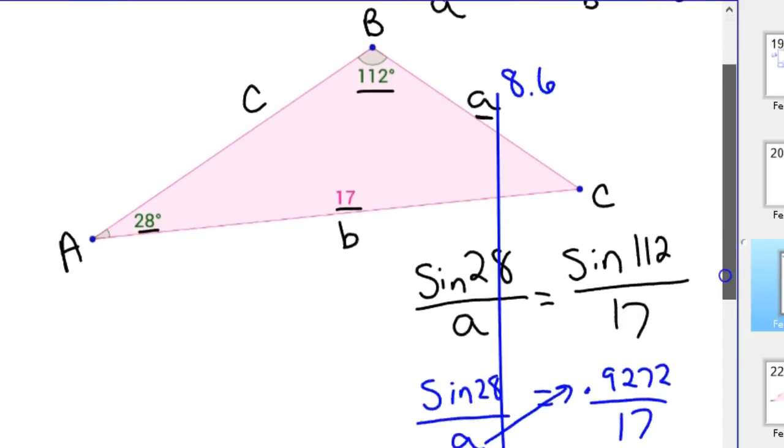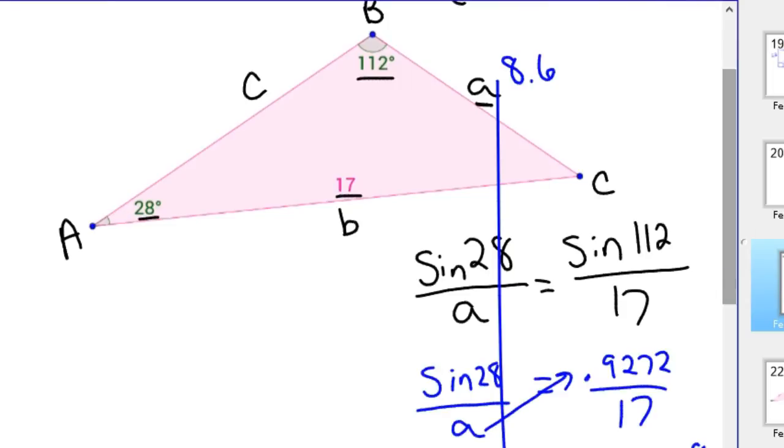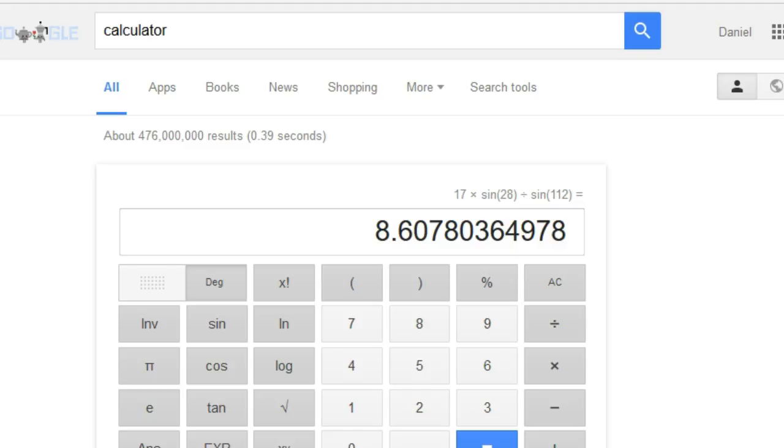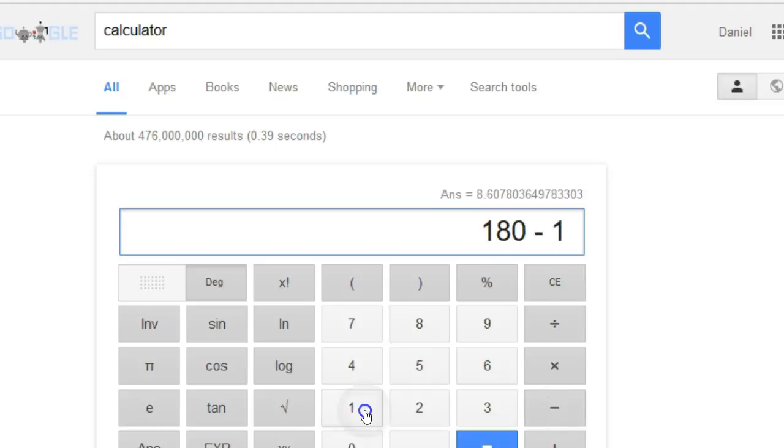Now if you want C, you just do the same thing. One thing we're missing though is we need this angle C right here. So we'll go ahead and find that, because we know triangles equal 180. So you take 180 minus 112 minus 28, and so 40 degrees is that other angle.